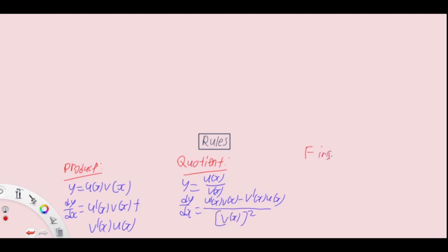Differentiation by first principles: we let y equals fx and the derivative is the limit as h approaches zero of f of x plus h minus fx over h. This comes like a gradient, which is basically differentiation by first principles.